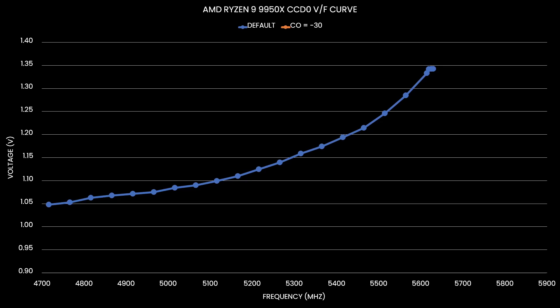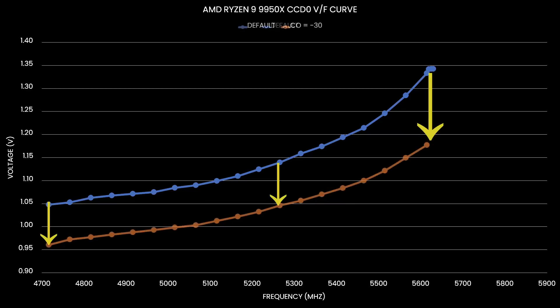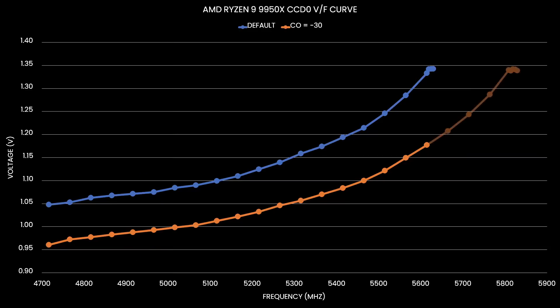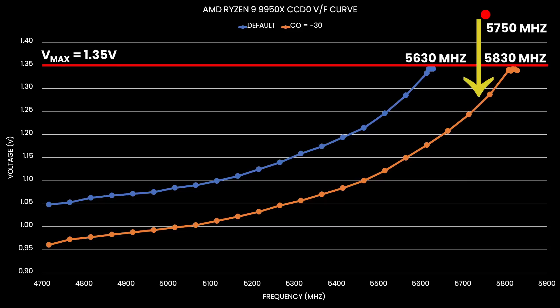If we set a Curve Optimizer of negative 30, we shift the entire voltage-frequency curve and suddenly need a lot less voltage for every operating frequency. For example, for 5 GHz, we needed about 1.08V by default, but with a minus 30 Curve Optimizer, we only need 0.995V. Moreover, the frequency is also boosting higher — the highest frequency with all eight cores active has increased by 200 MHz to 5830 MHz. These higher frequencies are now possible because our Curve Optimizer undervolting pulled them below the 1.35V threshold.